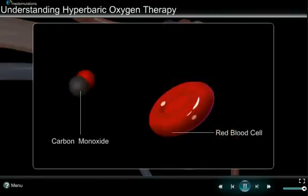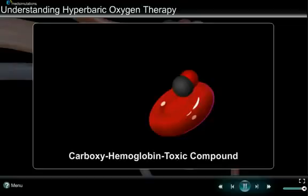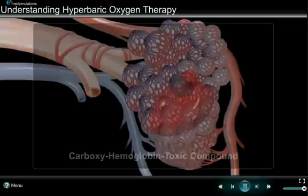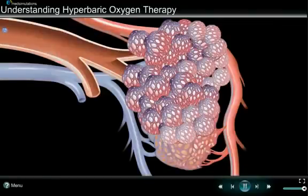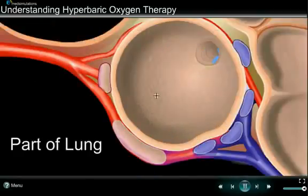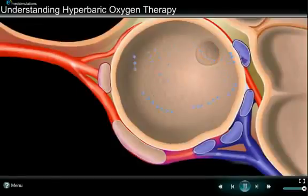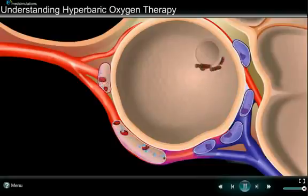Carbon monoxide poisoning occurs when carbon monoxide attaches itself to hemoglobin, an oxygen-carrying protein in the blood, resulting in the formation of a toxic compound called carboxyhemoglobin. Hyperbaric therapy makes the blood oxygen-rich by dissolving an increased amount of oxygen into the blood. This action breaks the bond between hemoglobin and carbon monoxide. Carbon monoxide is then eliminated from the body rapidly through the lungs during breathing.